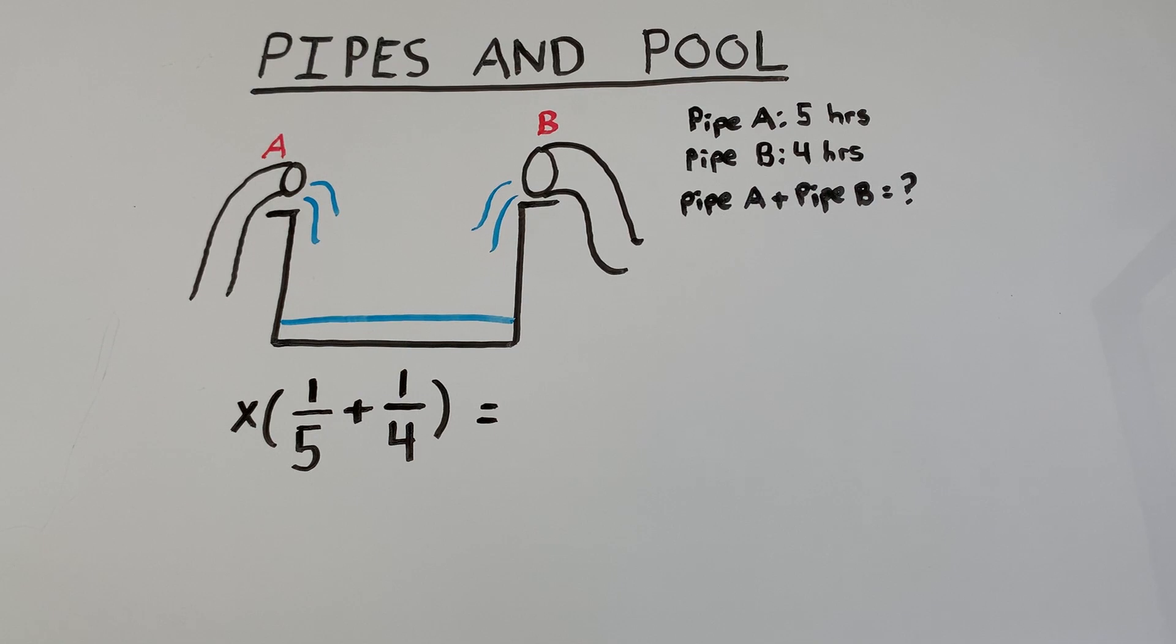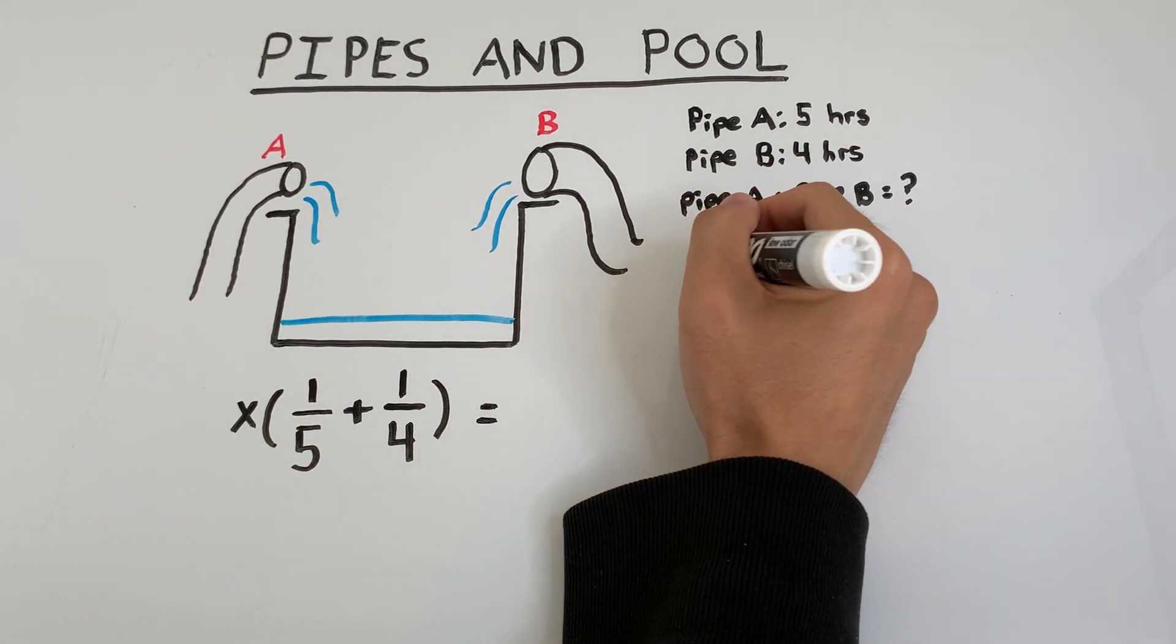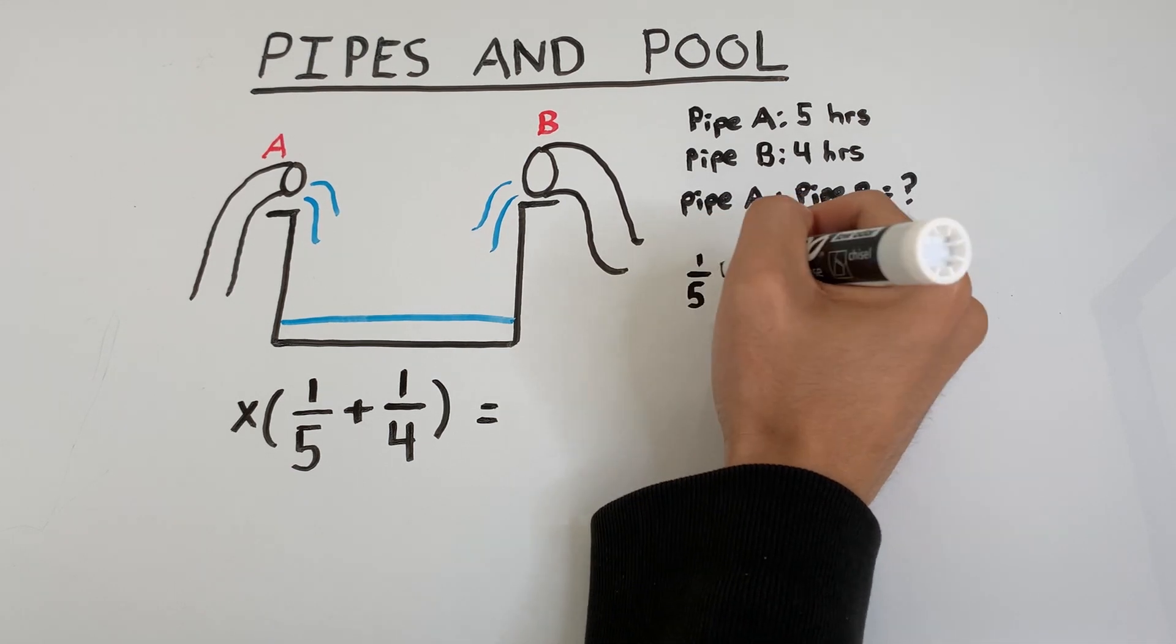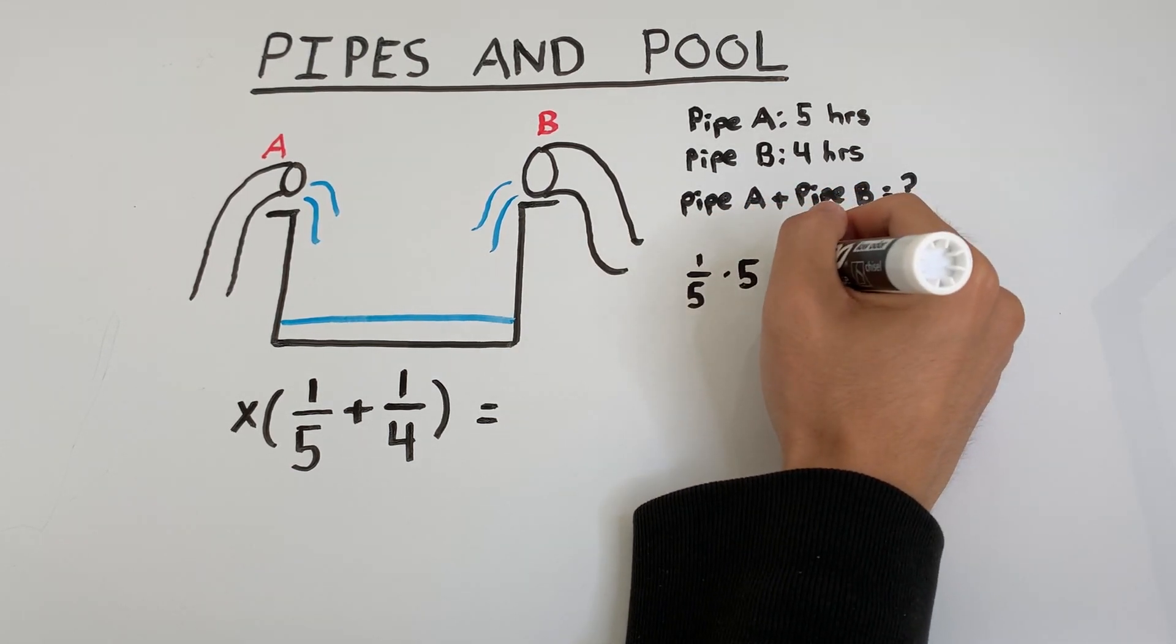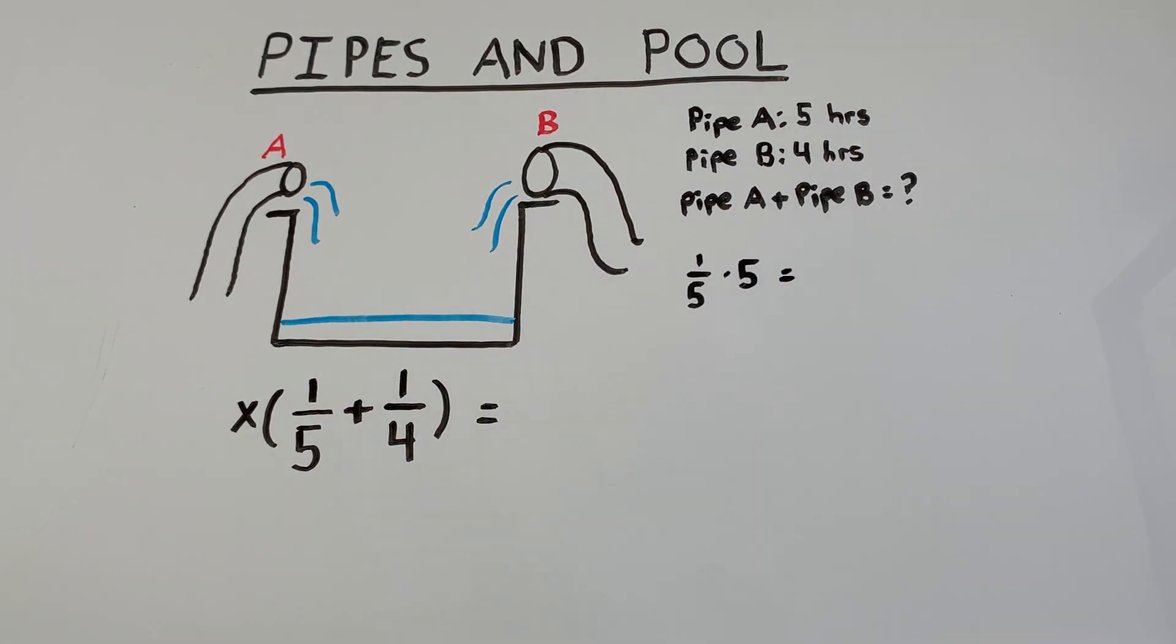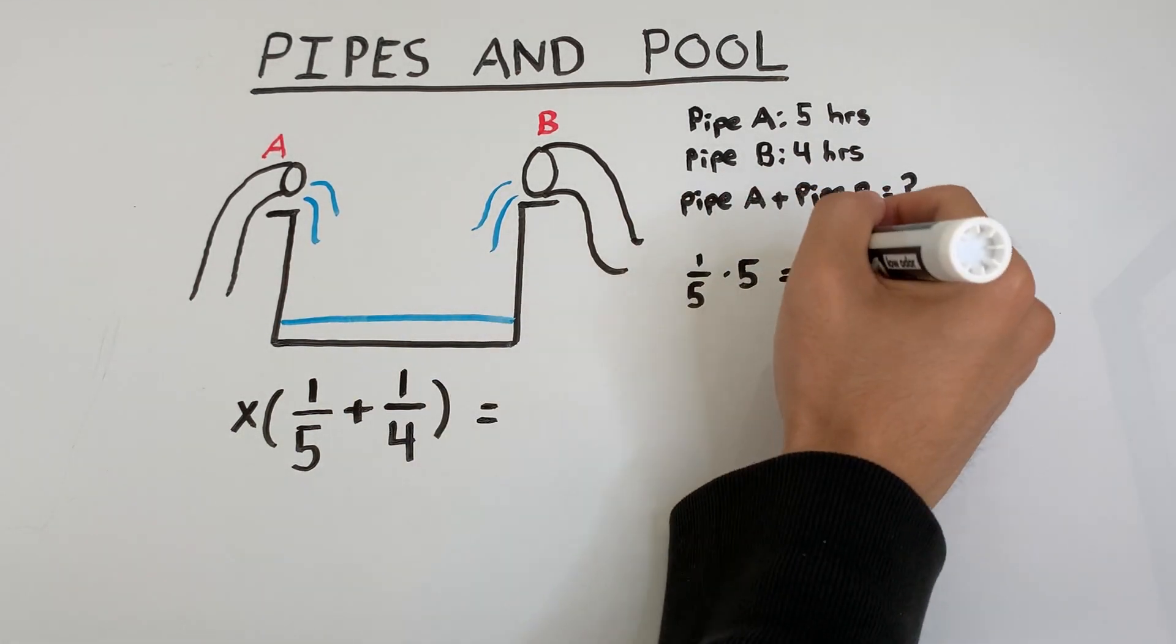Now what should this be set equal to is the big question. Well, let's take a look at our previous examples. Pipe A fills a fifth of the pool in one hour and it's on for five hours, and that fills up one entire pool.